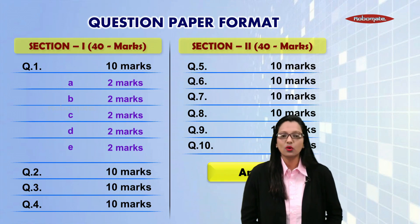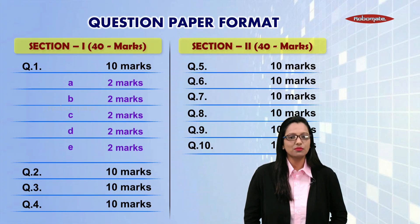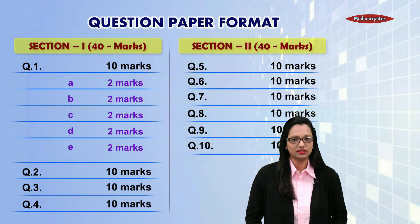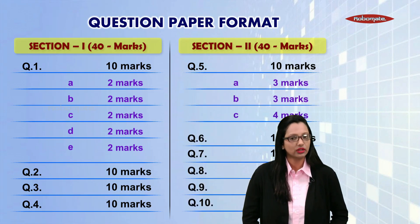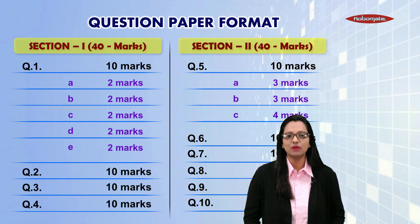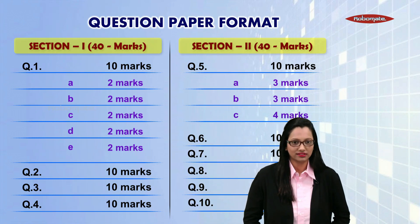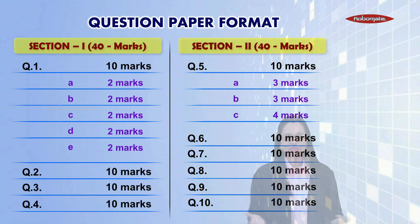Now looking at each question in Section 2, question number 5 or any other question in this section has been divided into 3 sub-questions: 2 carrying 3 marks and 1 carrying 4 marks. The sequence can be jumbled up in any paper.